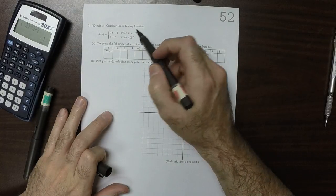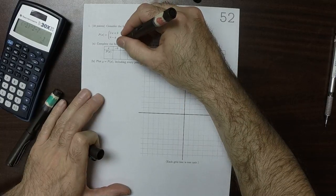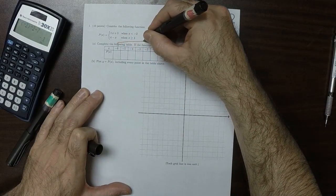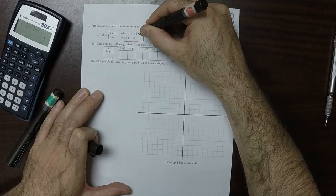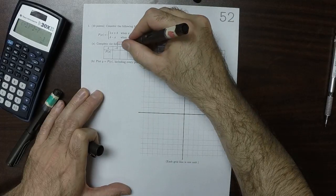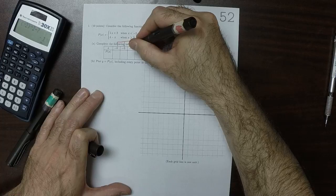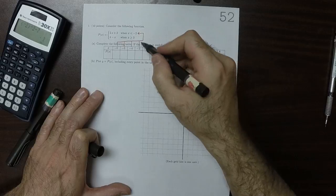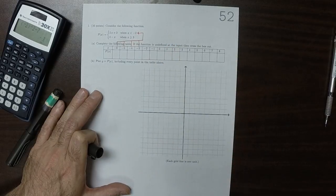So when x is less than negative 2, that means that one goes there. Negative 5 is less than negative 2, negative 4 is less than negative 2, negative 3 is less than negative 2. So then negative 2 is not less than negative 2.